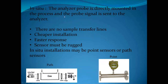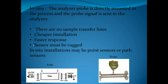For in-situ specifically, the probe is directly mounted in the process. Benefits include no sample transfer lines, so no pluggage risk, lower cost, and faster response because the sensor is right there at the process. The downside is the sensor must be rugged enough for the field environment — temperature, weather, vibrations. In-situ sensors may also be point sensors or path sensors; path sensors use a transmitter on one side and receiver on the other, shining infrared light through the sample and measuring the absorbed difference.